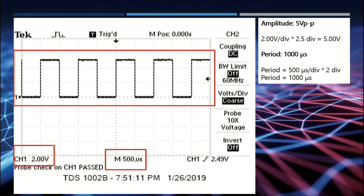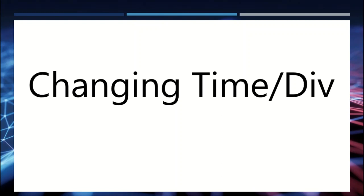So now you have a pretty good idea how to read the information off the screen, no matter what oscilloscope you're looking at. Start off with a predetermined signal. Once you get that predetermined signal, you can look at the screen and determine what each piece of information means — the most important things being: what are my divisions in terms of voltage, and what are my divisions in terms of time.